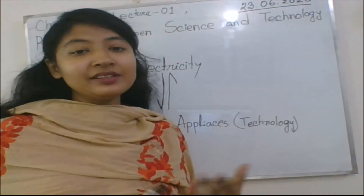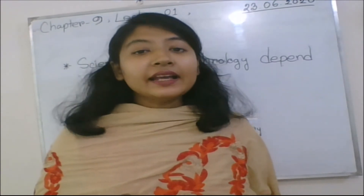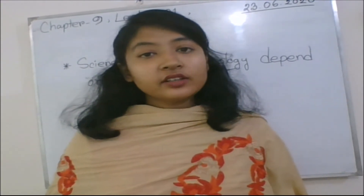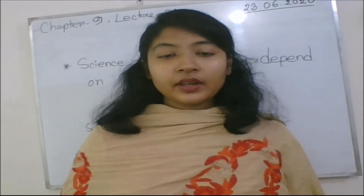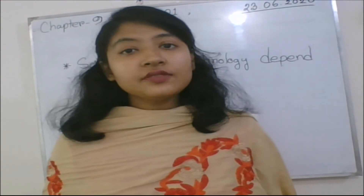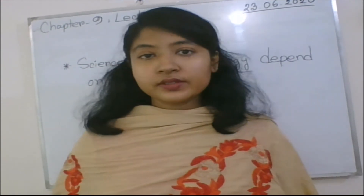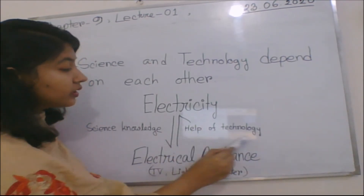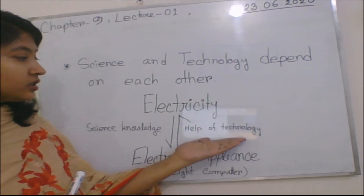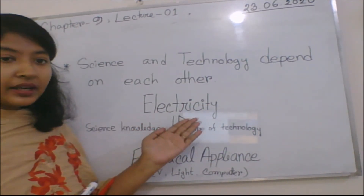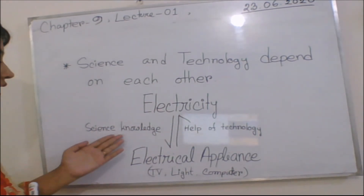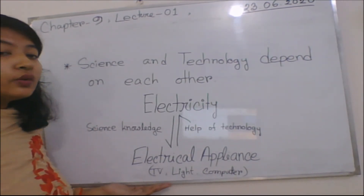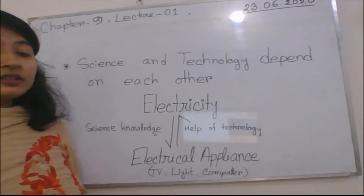Our last topic is that science and technology depend on each other. Scientists use technology to study the natural world, and technology applies scientific knowledge to create new products or tools. For example, we use different types of equipment to gather knowledge about science such as electricity, and with the help of that science knowledge, we are able to create different types of new electrical appliances such as lights, TVs, and computers.